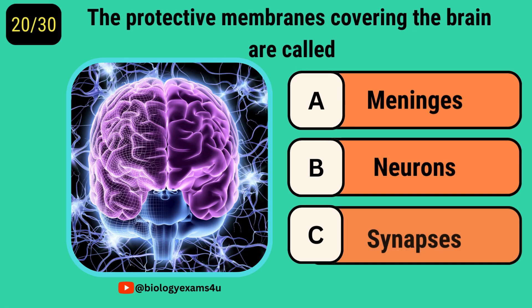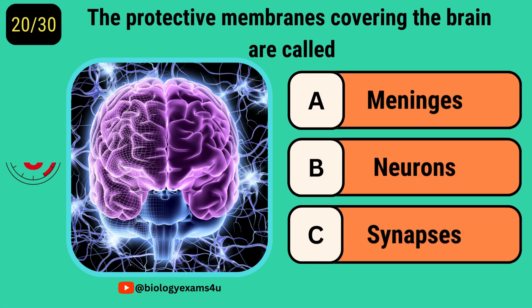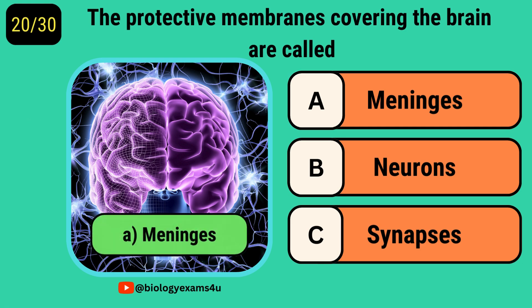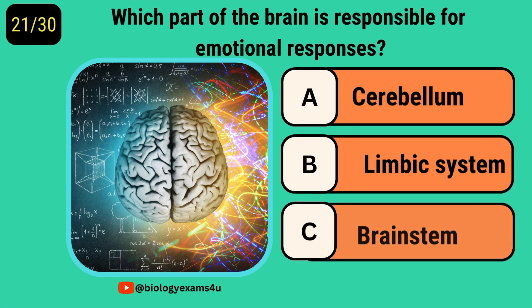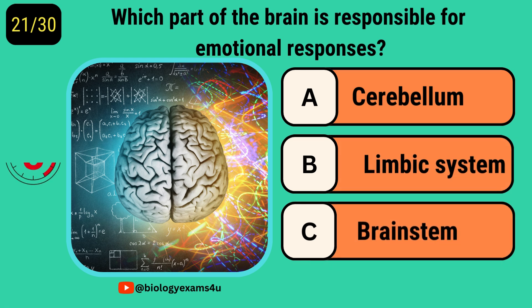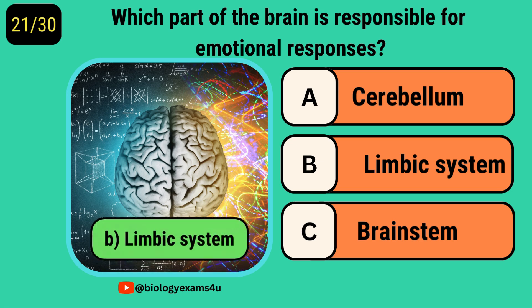The protective membranes covering the brain are called? Meninges. Which part of the brain is responsible for emotional responses? Limbic system.